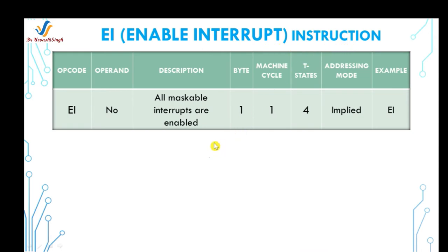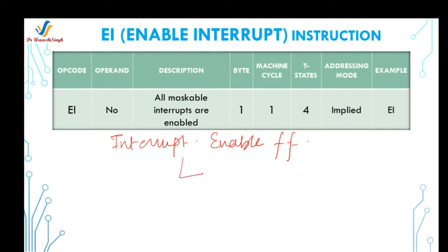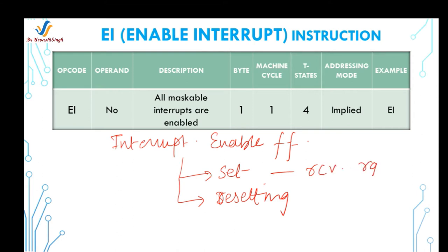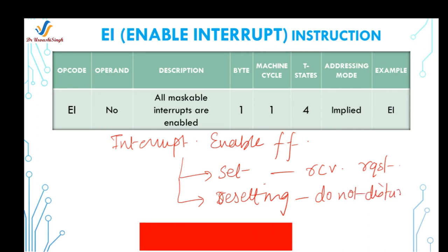Before going into detail of the instructions, let's first understand a very important flip-flop known as the interrupt enable flip-flop. This flip-flop is internal to the microprocessor and is used to make the microprocessor receive service requests from external devices, or to remain in do-not-disturb mode. If the flip-flop is set, the microprocessor will receive requests from the external device; otherwise it will be in do-not-disturb mode.